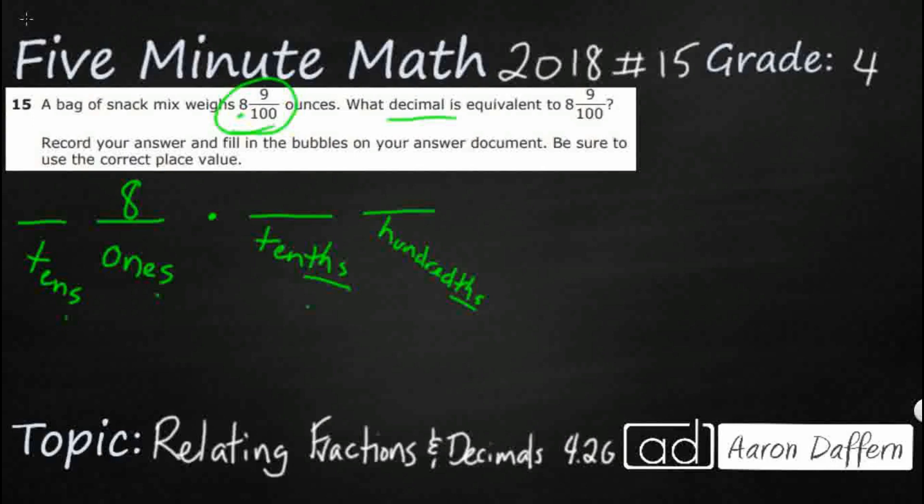Now, this is where it gets really tricky. My first thought might be to put my nine right there because it's just a single digit. But we have to take a look at the denominator. So this is nine hundredths. If I were to put that nine right there,